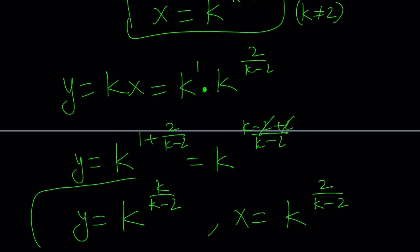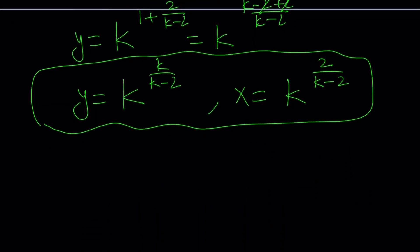And we have x equals k to the power two over k minus two. So if you divide y by x, you get k because y equals kx. Awesome. So we got the solutions, and k does not equal zero or two.